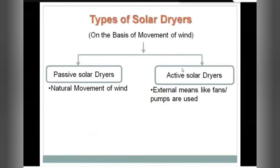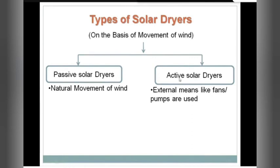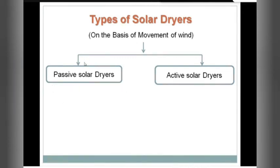Everything we had done so far was totally natural — natural movement of wind, hot air rising naturally. But scientists always try to mimic natural things and convert them into machinery over which they have control. They thought: why always depend on natural air movement when cold air enters and hot air exits so slowly? Why not induce a fan or pump inside the solar dryer to force air in? So they added fans or pumps inside the solar dryer — these are called active solar dryers. Those working on natural wind movement are called passive solar dryers.